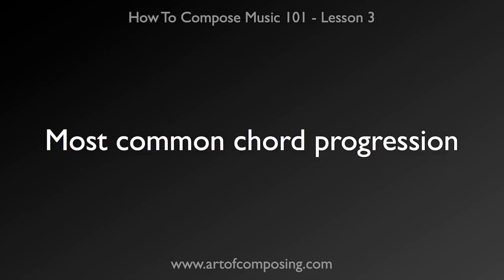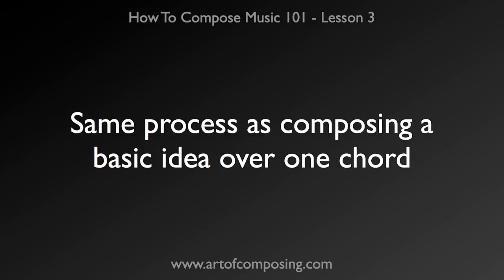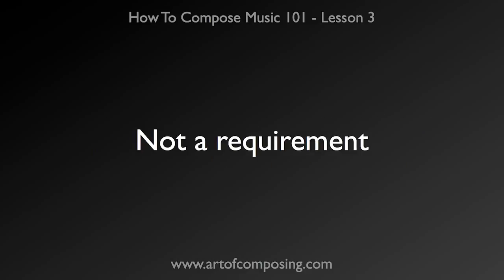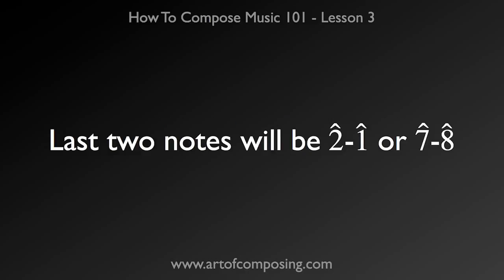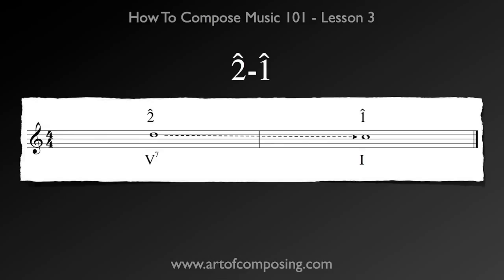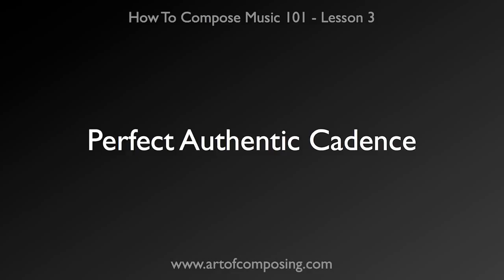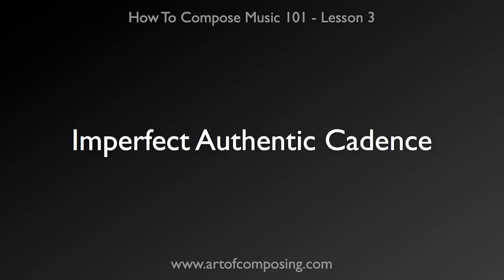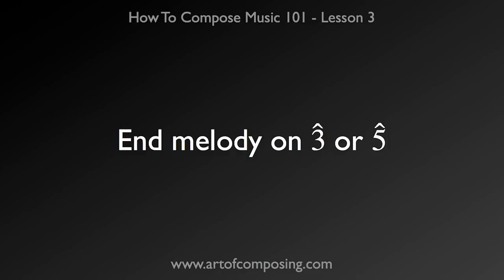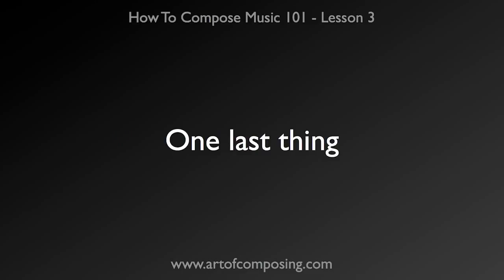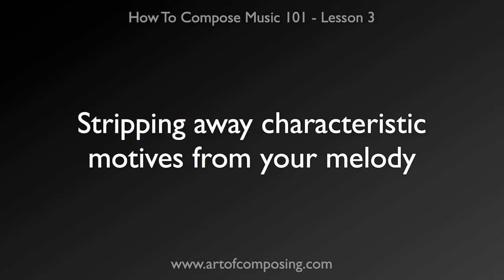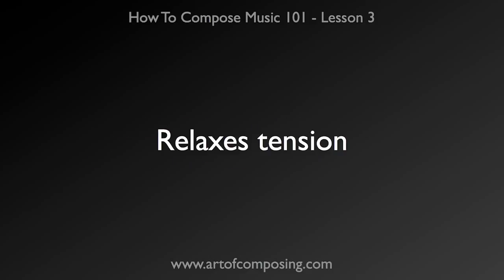This is one of the most common chord progressions in all of music — not just classical, but jazz, rock, and pop as well. When composing an idea over more than one chord, the same rules apply; just make sure you're using the right chord tones over the harmony. There's one specific thing I want you to do: the last two notes in the melody will either be 2-1 or 7-8. In C major, that's either D-C or B-C. Perfect authentic cadences end with tonic in the melody, while imperfect authentic cadences end with another chord tone — so either 3 or 5. One last thing: if you have a very busy melody with lots of notes, you want to end your period with something called liquidation. Liquidation is basically stripping away characteristic motives from your melody and giving it a plainer feeling, which allows your music to kind of relax at the end.